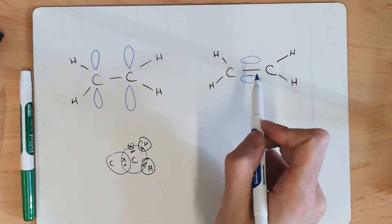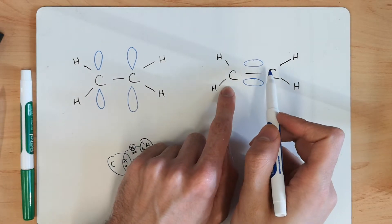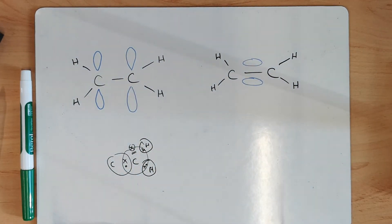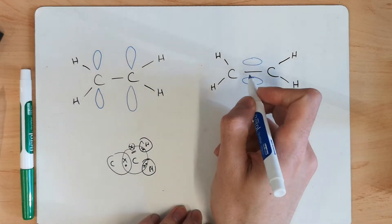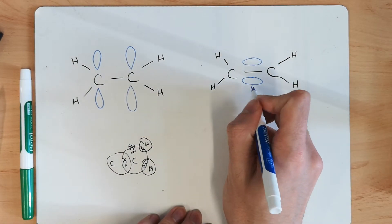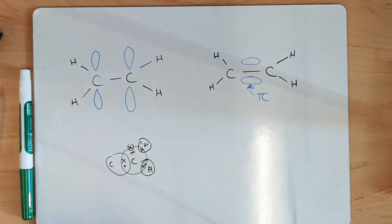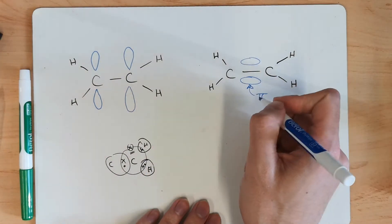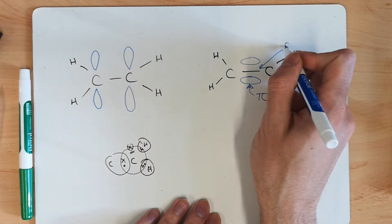But the two electrons, one from this carbon, one from this carbon, are actually now inhabiting this space above. And this, when we've got these two electrons inhabiting there, this is our pi bond. So, I've got on here my pi bond and my sigma.